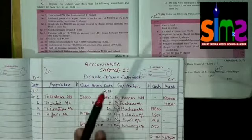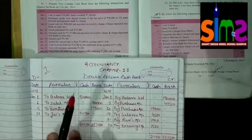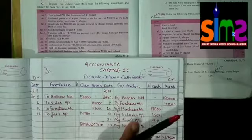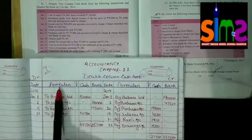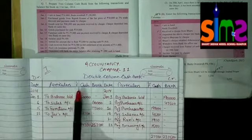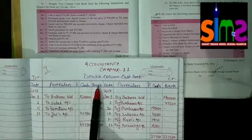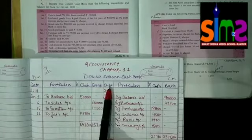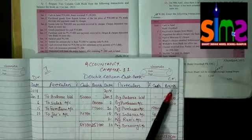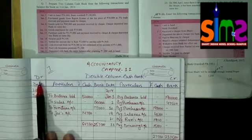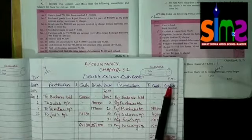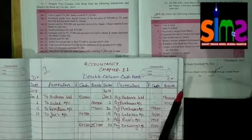I have already prepared the format of double column cash book: date, particulars, LF, cash, bank on both sides. The left hand side is the debit side and the right hand side is the credit side.